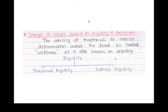Stiffness or rigidity design is classified into two categories: one is torsional rigidity and the second is lateral rigidity. Torsional rigidity means the shaft is subjected to torsion, and the torsion equation T/J = τ/r = Gθ/L is used. Lateral rigidity depends on deflection.